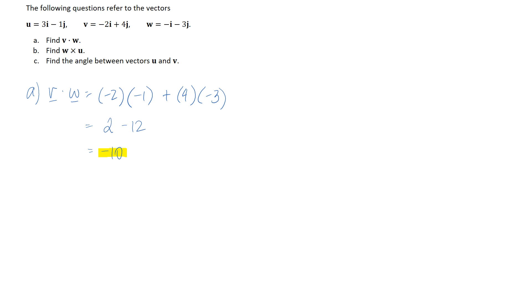Alright so move on to the next part here which is b and here we want to find w cross u so this is the cross product of those two vectors.